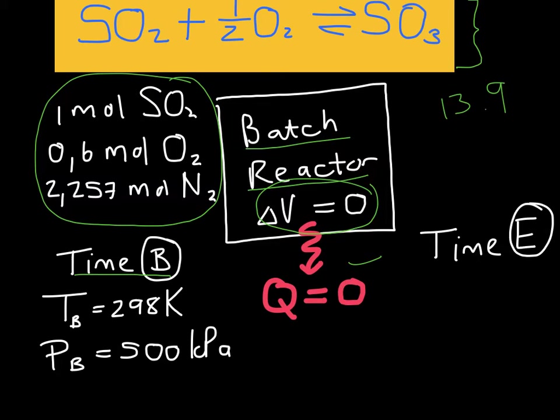Let us consider a process where the initial temperature in the reactor is 298 Kelvin and its pressure is 500 kilopascals. Before you continue, what do you expect to happen to the pressure in the reactor as the reaction proceeds?